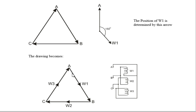Looking at the diagram, W1, W2, and W3 are positioned, and the arrow means the polarity side is connected to B. Drawing your windings W1, W2, W3: the polarity side of W1 is connected to B; the polarity side of W2 is connected to C; the polarity side of W3 is connected to A. The non-polarity side of W1 is connected to A; the non-polarity side of W2 is connected to B; the non-polarity side of W3 is connected to C. So you have successfully drawn the D5 — five o'clock — connection.